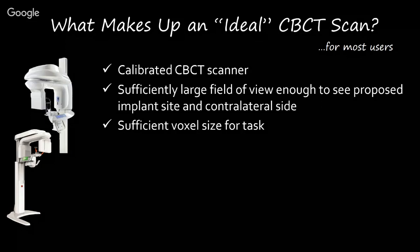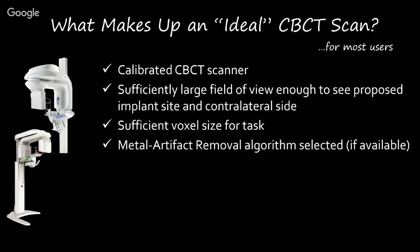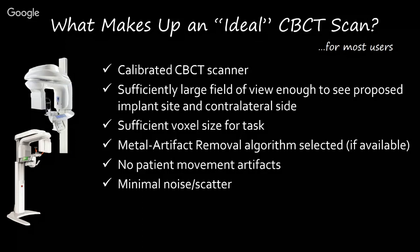You need to scan with sufficient voxel size for the task. If your scanner allows for a metal artifact removal algorithm, I do select that for most patients regardless of whether they have restorations. It is also important to ensure no movement artifacts on your CBCT scan — if I see a double vision or movement artifact, I have to correct that right away. So any time a cone beam scan is made in my office, before the patient leaves, I verify the scan has been done correctly.